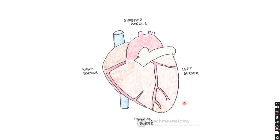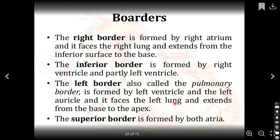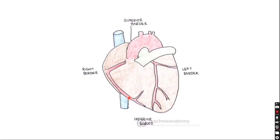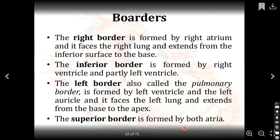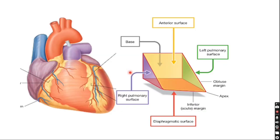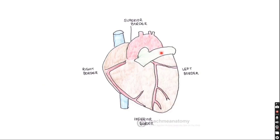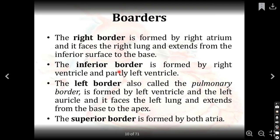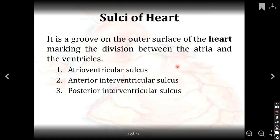There are 4 borders of the heart: the superior border, inferior border, right border, and left border. The right border is formed by the right atrium. The superior border is formed by both atria — the left atrium and right atrium. The inferior border is made by both the right and left ventricles. The left border is formed by the left ventricle and left auricle.